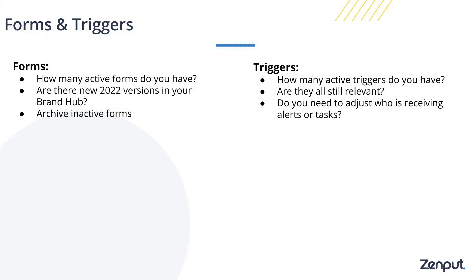Triggers are often called corrective actions in Zenput. They give you a way to know — when you're out doing an audit and you see that the parking lot is dirty, if you mark a question as no, that assigns a task to the store to actually clean the parking lot. While it's great to know the parking lot is dirty, what you really want is a clean parking lot. I recommend reviewing all your triggers, making sure they're still relevant, and making sure the recipients of tasks or alerts match the current reality of your business, since people move on and things change.